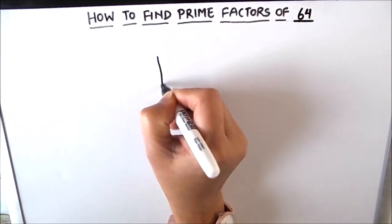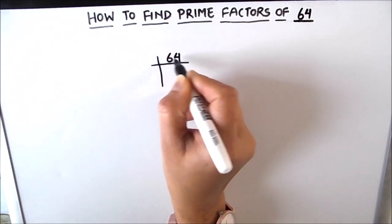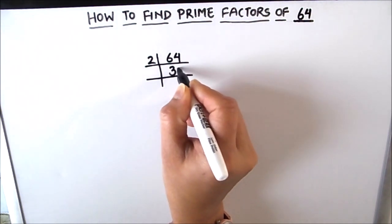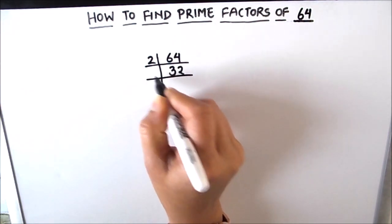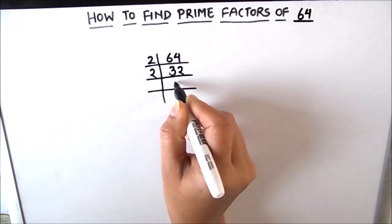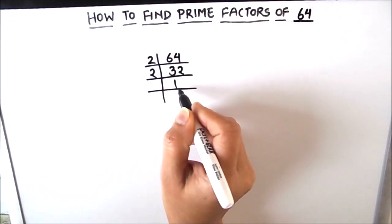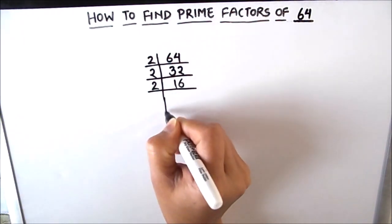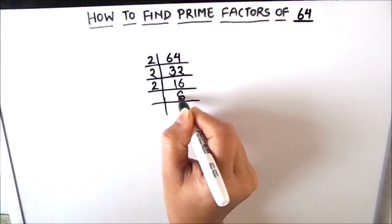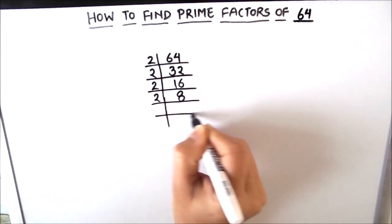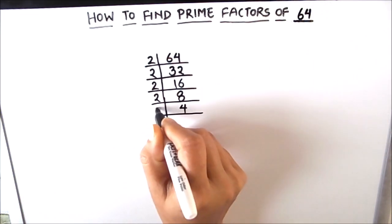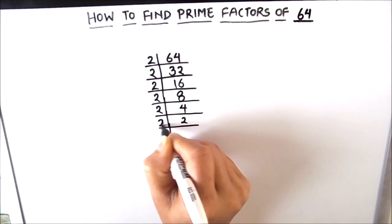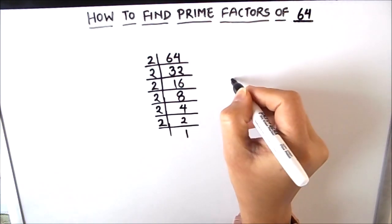Let's divide 64 and find its prime factors. As 64 is an even number, it is fully divisible by 2. We divide 64 by 2 to get 32, then divide 32 by 2 to get 16, then 16 by 2 to get 8, then 8 by 2 to get 4, then 4 by 2 to get 2, and finally 2 by 2 to get 1.